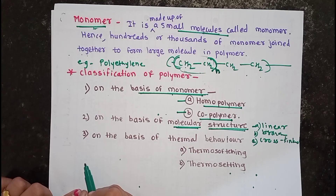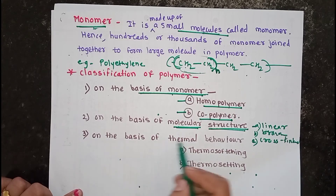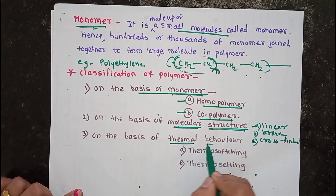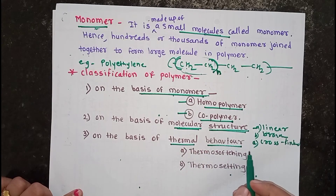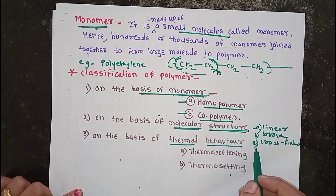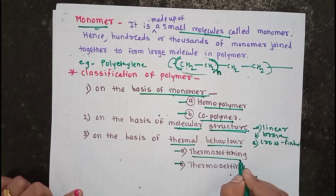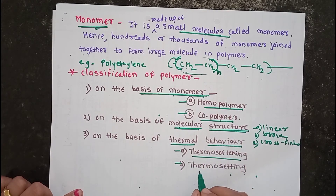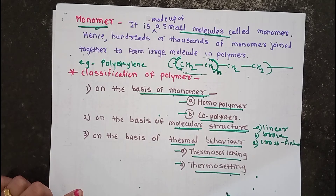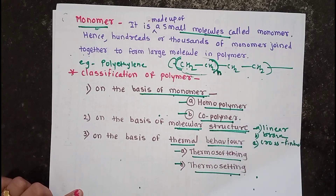The third classification is on the basis of thermal behavior. Thermal behavior classifies polymers into two types: thermosoftening polymers and thermosetting polymers. We will discuss each of these types one by one.